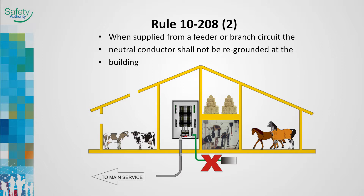Stray neutral voltages are well known to exist and can affect cattle and other livestock in barns and milking parlours. These stray neutral voltages are often referred to as tingle voltage. A tingle voltage problem as small as 0.5 volts can severely affect livestock and result in reduced milk production, skittish or nervous animals, and lack of appetite, all leading to chronic health problems. Regrounding the neutral conductor might contribute to the tingle voltage effect.